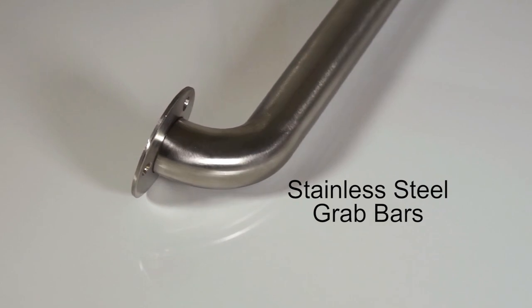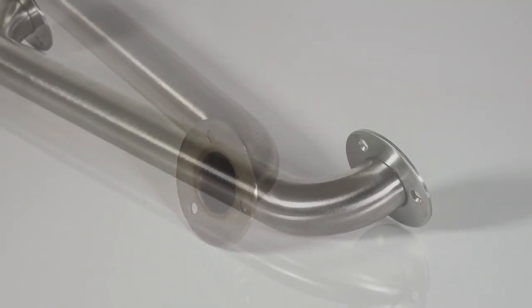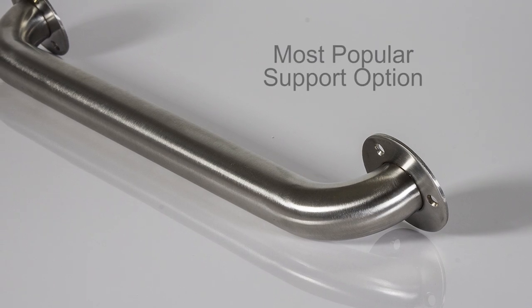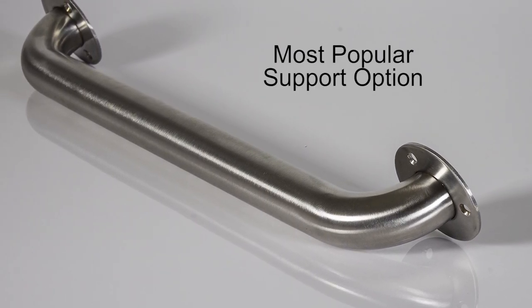Stainless steel grab bars are our most popular choice for installation in commercial restrooms and residential bathrooms. They are made of durable number 304 stainless steel to provide strong support for elderly and disabled users.